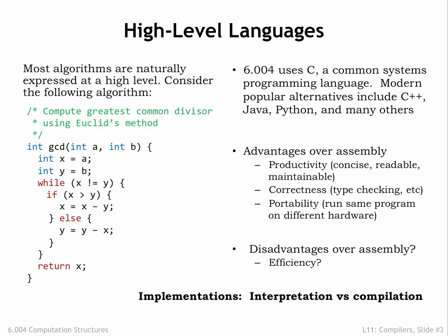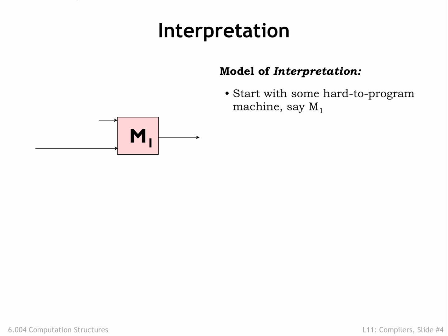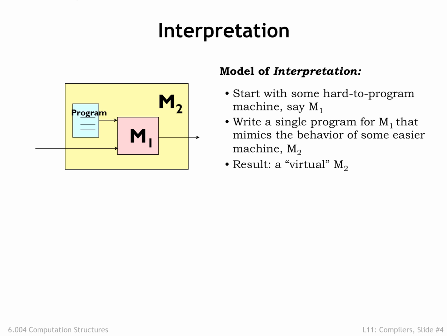The two basic execution strategies are interpretation and compilation. To interpret a high-level language program, we'll write a special program called an interpreter that runs on the actual computer M1. The interpreter mimics the behavior of some abstract, easy-to-program machine M2, and for each M2 operation executes sequences of M1 instructions to achieve the desired result.